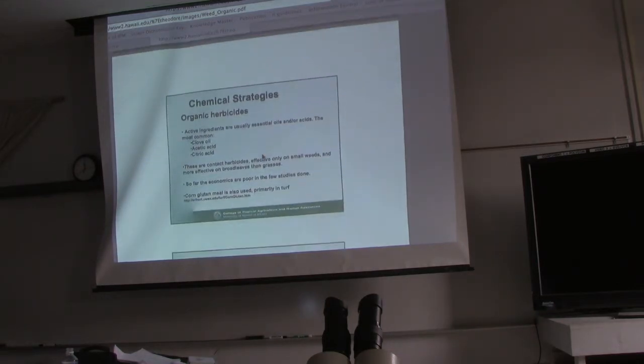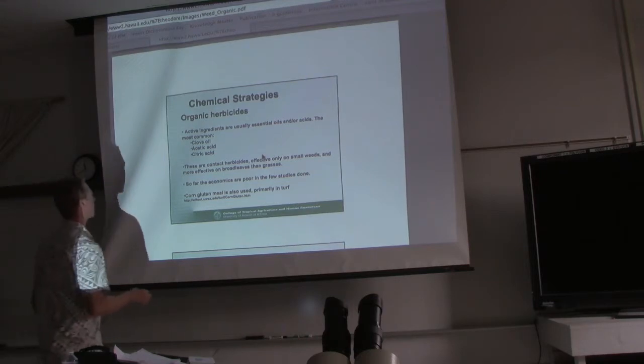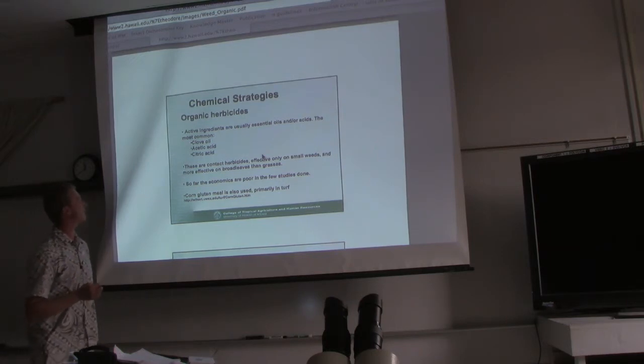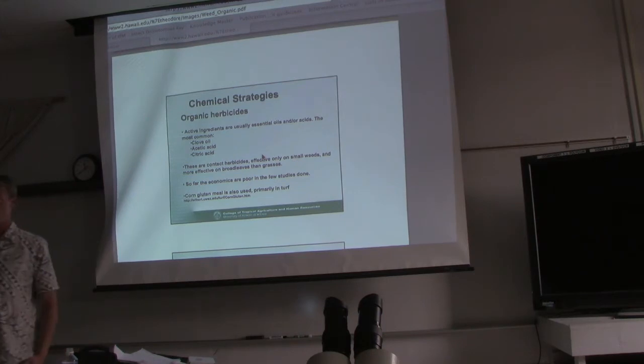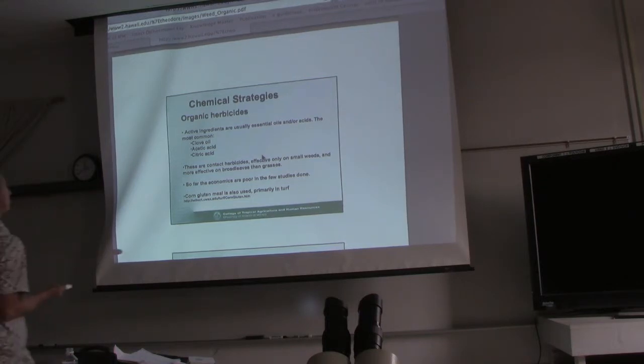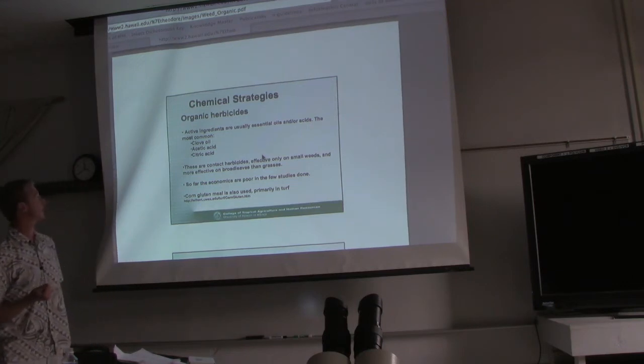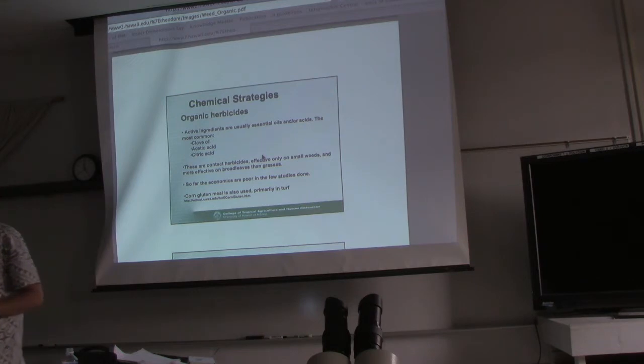Chemical strategies. You can use organic herbicides, they do exist. Active ingredients are usually essential oils or acids - clove oil, acetic acid. What's acetic acid? Vinegar. Citric acid. Not a lot in there but it certainly is in there. I would get an actual amendment that has citric acid. These are contact herbicides, effectively only on small weeds and more effective on broadleaf grasses. Basically once you spray them out, they will kill the weeds that are there, but if any come up tomorrow, those won't be affected.